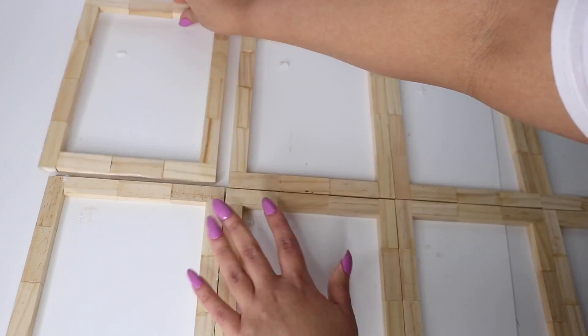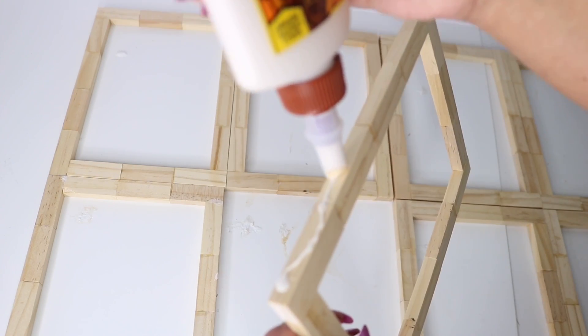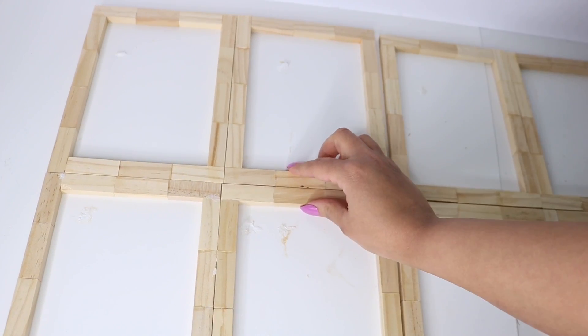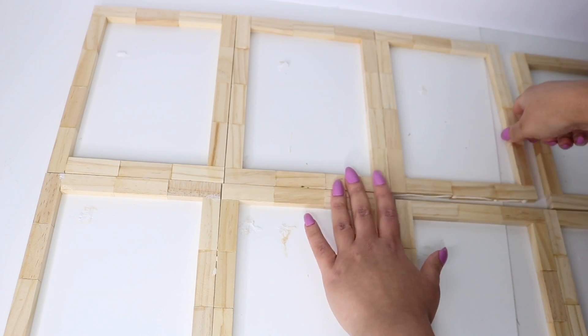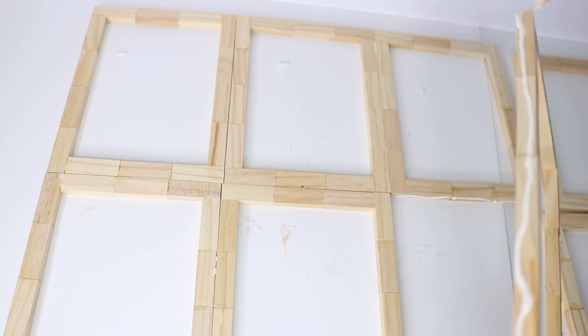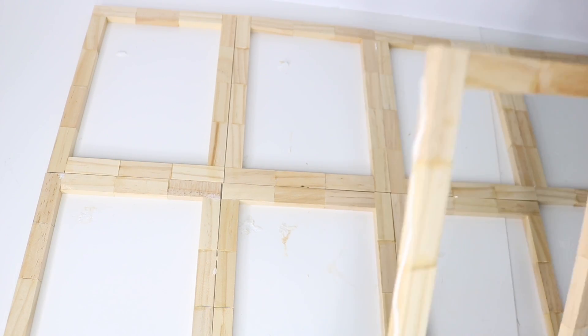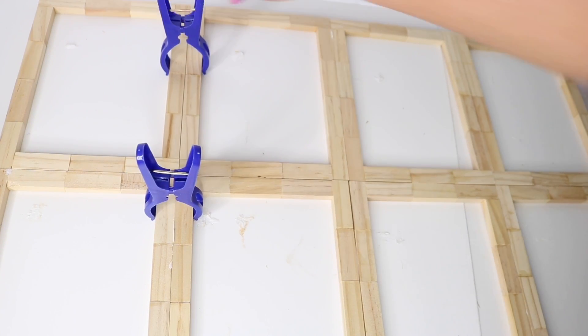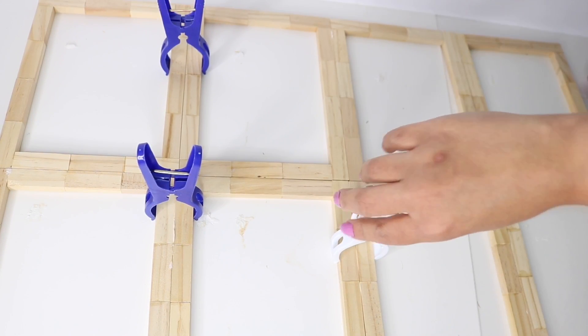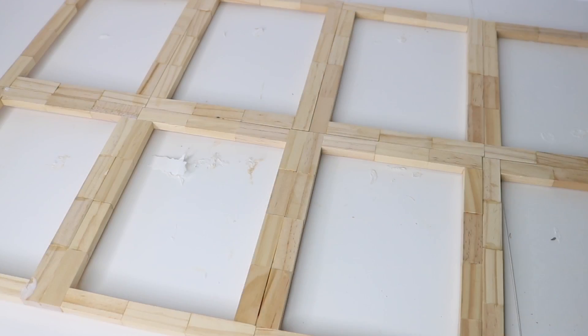Then you can go ahead and attach them to each other. So I just added wood glue to the edges and pressed them up against each other. You can do this as you are assembling your pieces. I wanted to do it afterwards because I really didn't know how I wanted to stack these or if I needed to move anything around. So now I grabbed these Dollar Tree clips and I just made sure that everything was nice and tight while it dried. I let it dry 24 hours.